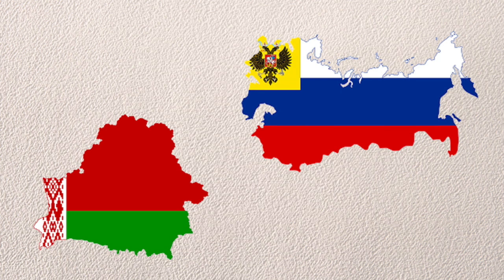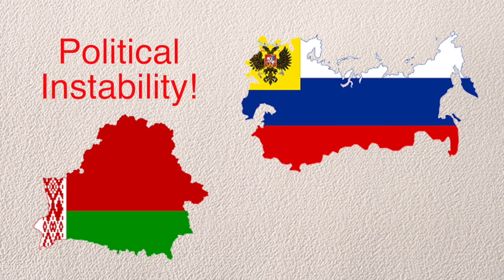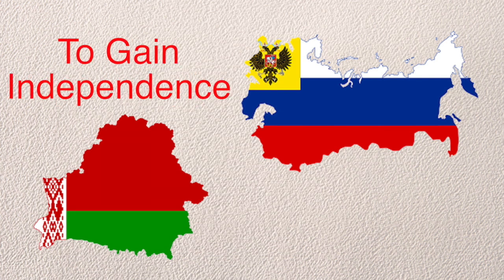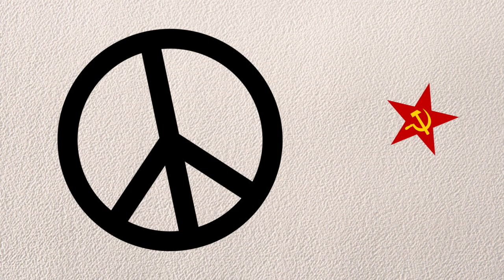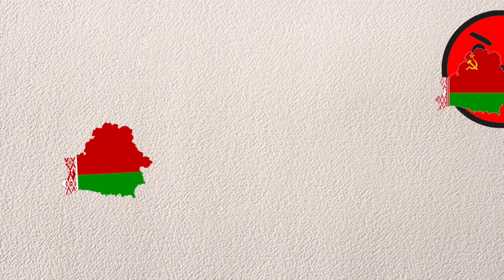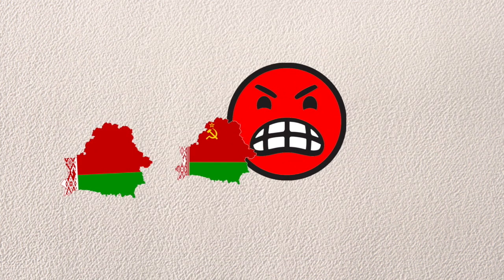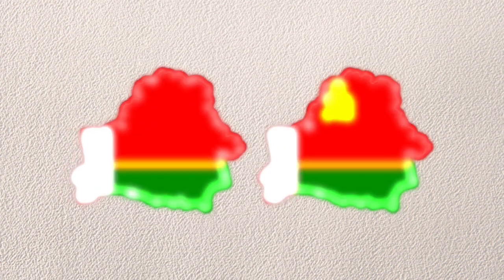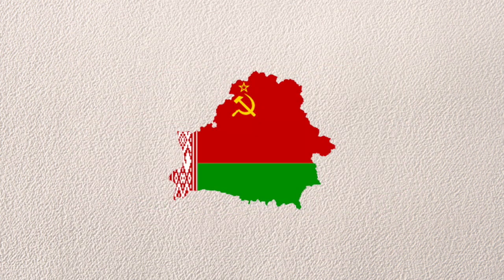Then we have Belarus, who saw the Russian Revolution and was like: political instability — better use this opportunity to gain independence. They basically did the same thing as Ukraine, except much more peaceful and also not that communist. But the red-loving Tsar haters didn't like this and set up a different Belarus government. After some time, the two merged into the Belarus Soviet Socialist Republic.